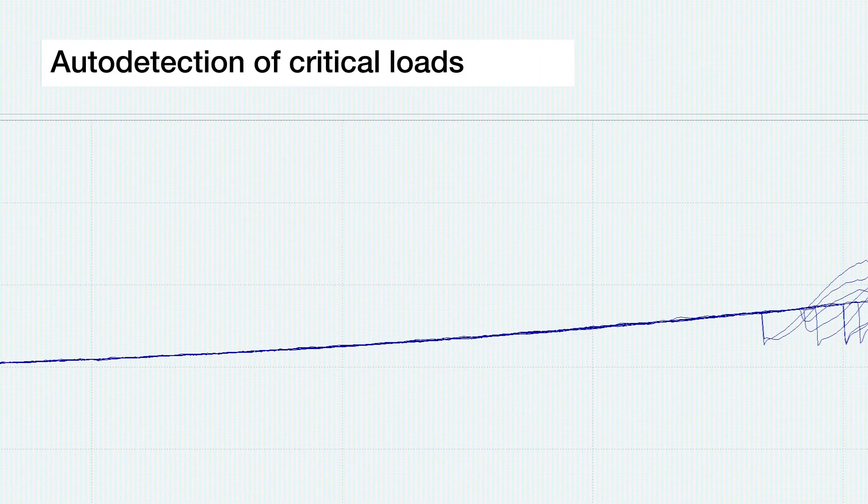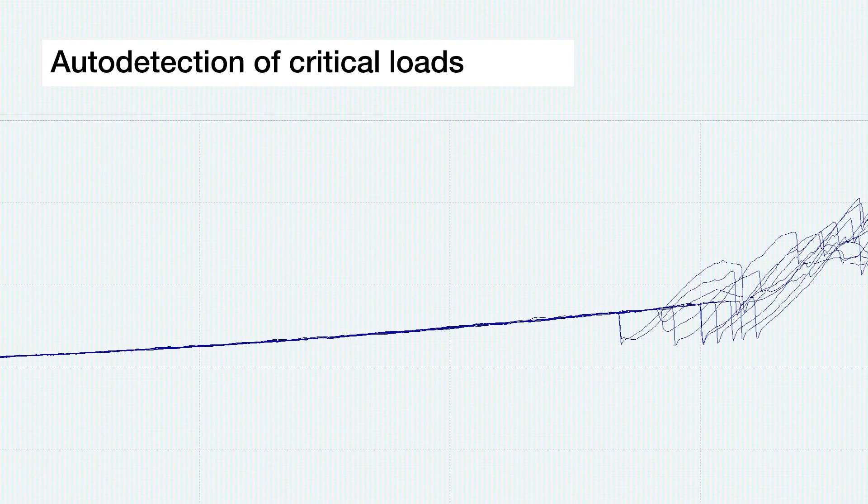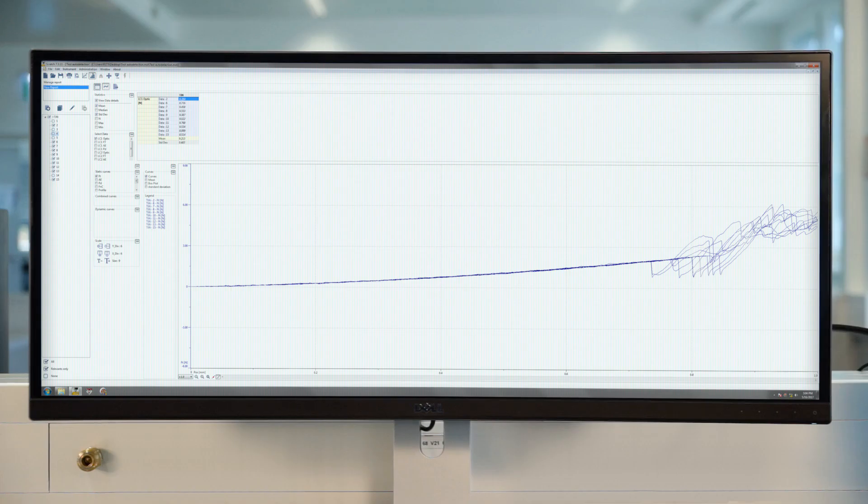Anton Parr is the first company introducing a function called auto-detection of critical loads for a perfect user-independent determination of the critical load.